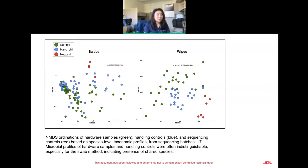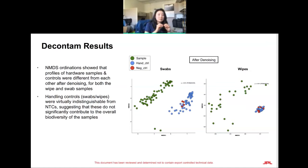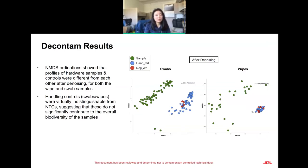Decontam is software that looks at the absence and presence of IDs within a sample and statistically removes contamination that is present consistently across many samples and across controls — identifying what's showing up consistently and removing it from our actual samples. After applying decontam, our samples, handling controls, and negative controls no longer overlapped.